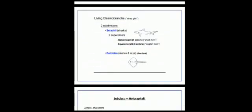Two major groups of Class Chondrichthyes are Elasmobranchii and Holocephali. Some subdivisions are Selachii and Batoidea.